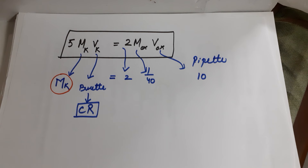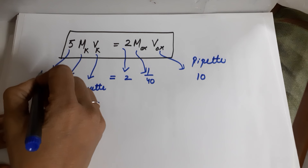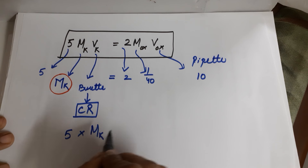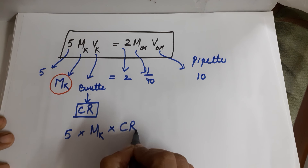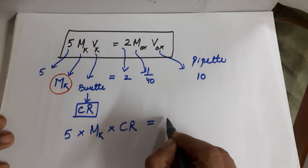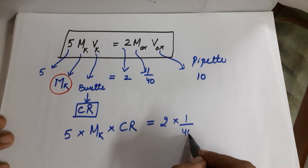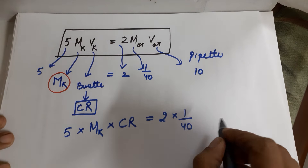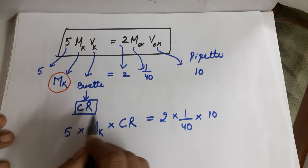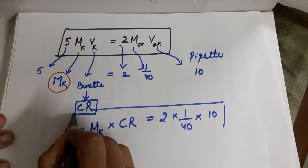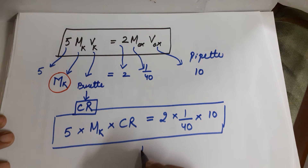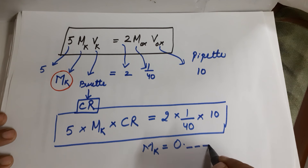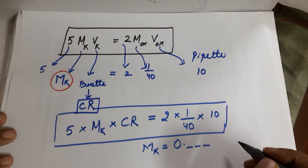The molarity of KMnO4 is always to be determined — you are never given it because it is a secondary standard. So your values will be: 5 × (molarity of KMnO4 to be found) × (concordant reading from 3 titrations) = 2 × (molarity of oxalic acid provided) × (volume of oxalic, e.g. 10 ml). Once done, you get your value for molarity of KMnO4. Please express it to at least 3 decimal places and do not round it off, and include the unit M.